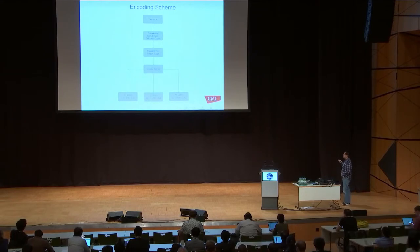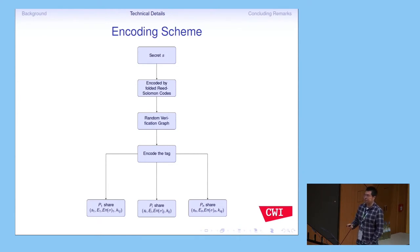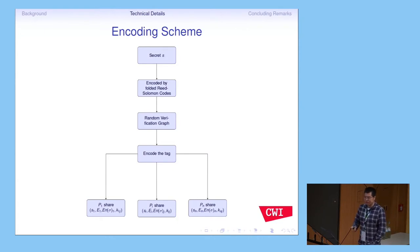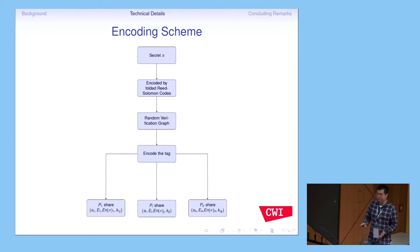This is our encoding scheme. We take our secret S and encode it using the folded Reed-Solomon code, then use the random verification graph to add authentication tags and keys to the shares. At the end, we encode the tag. The tag is stored robustly and globally so everyone can know the tag. If a party corrupts the tag, it makes no sense because the tag is stored robustly. However, we sacrifice some privacy of the tag — the tag is known to everyone — but if it is corrupted, we can recover it with high probability.